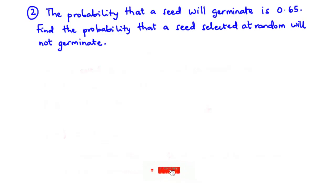The probability that a seed would germinate is 0.65. Find the probability that a seed selected at random will not germinate. We are told that the probability that a seed would germinate is 0.65, and we are going to find the probability that a seed selected at random will not germinate. Now this is a simple problem — let's tackle it together.